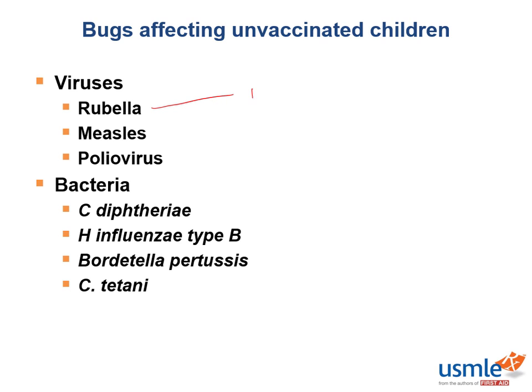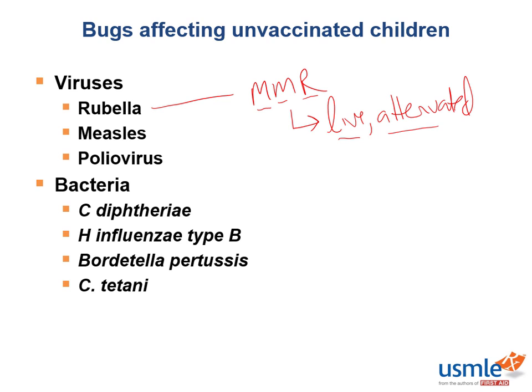This is the infamous MMR vaccine, and it is a live attenuated vaccine. In addition to rubella, it also protects against measles and mumps — so measles, mumps, rubella — and it is a live attenuated vaccine.